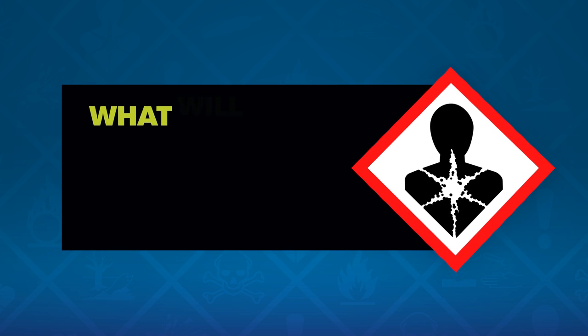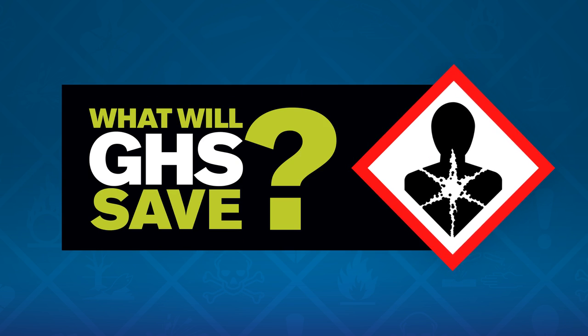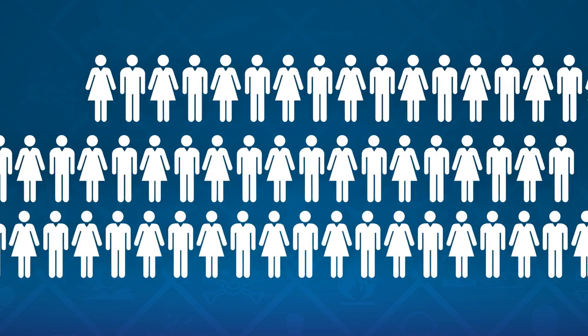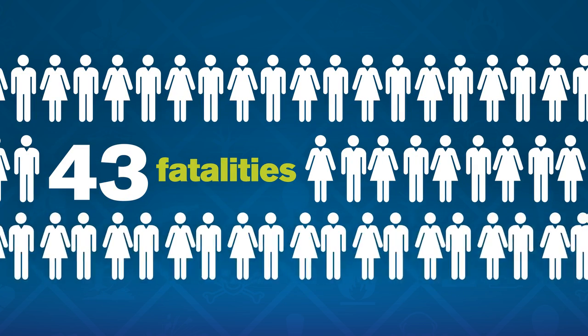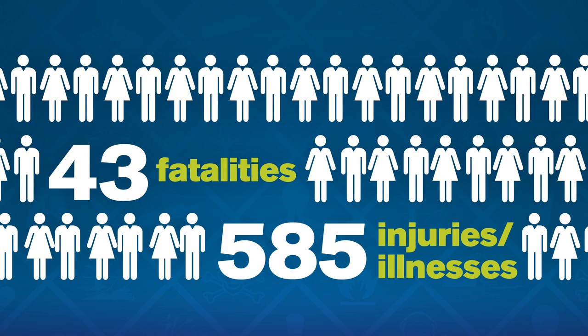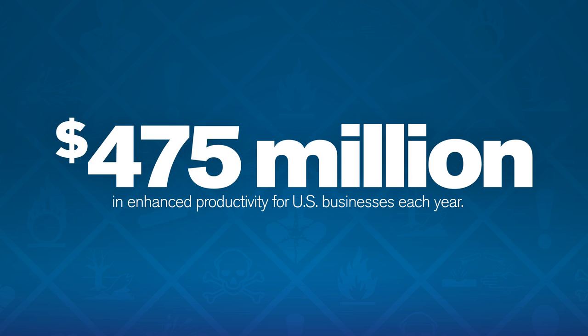So what will GHS save? OSHA estimates that the new standard will help prevent 43 fatalities, 585 injuries and illnesses, resulting in an estimated $475 million in enhanced productivity for U.S. businesses each year.